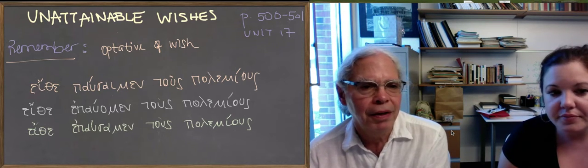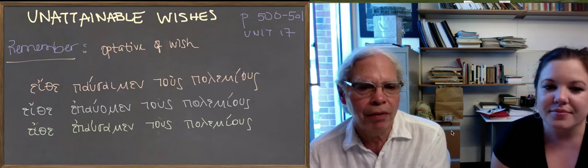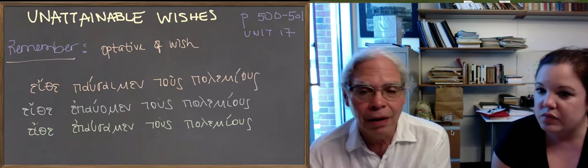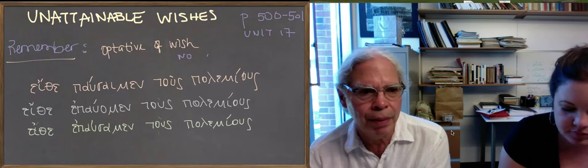We're going to talk about semi-attainable wishes of the type that we already had. That is, when you have the optative as a main verb of a sentence and no on, that's the key thing, just a plain old optative, it's a wish optative, maybe you remember.